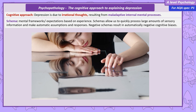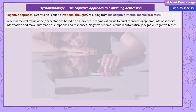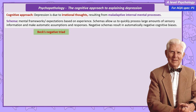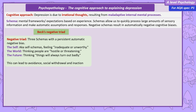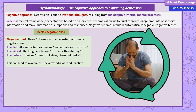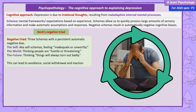Aaron Beck argued that people who are depressed have three types of schema with an automatic negative bias. He called this the negative triad. These are negative beliefs people have about themselves — called self-schemas — such as feeling inadequate or unworthy. They may have negative schemas about the world, seeing it as hostile and threatening, and finally they may have negative schemas about the future, assuming things will always turn out badly. These negative thought patterns can lead to negative behaviours such as avoidance, withdrawal, and inaction.